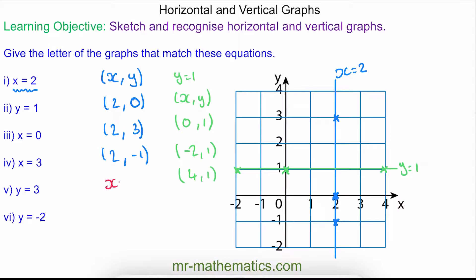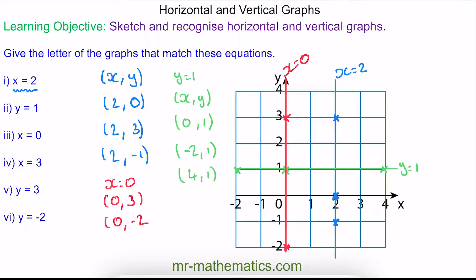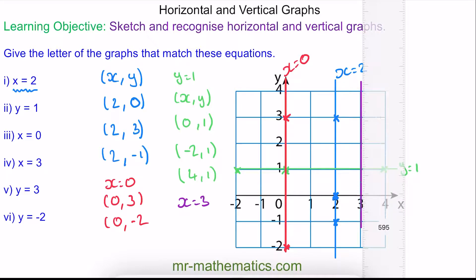For question 3, we have x equals 0, so x is always 0 in any coordinate pair. y could be 3, which would be here, or we could have 0 and negative 2. We join these two points to make the straight line of x equals 0, which is vertical and runs along the y-axis. For question 4, x equals 3 is a vertical line passing through x equals 3 here.